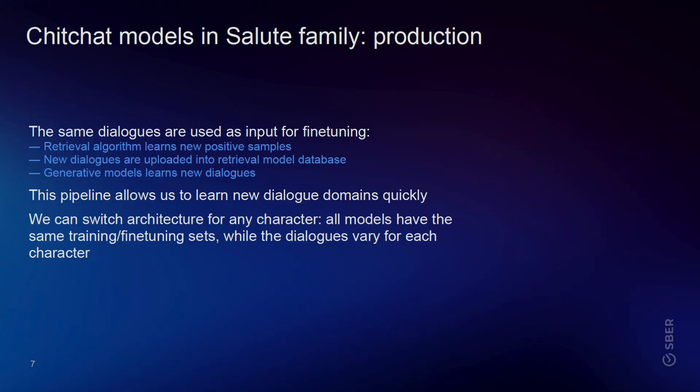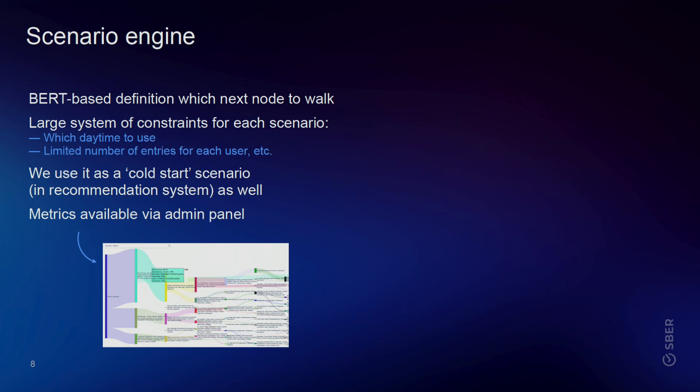Since we use the same architecture and the same dialogues to train both models, we can run fast experiments. If the generative model knows what the retrieval model knows for a particular character — say Athena — I can switch between these modes and see which one clients prefer: Athena's retrieval model or Athena's generative model.